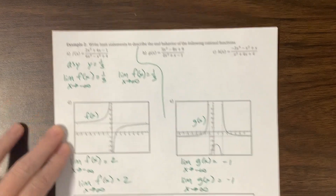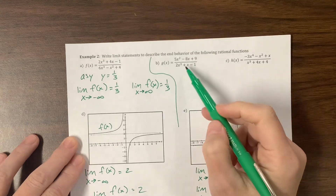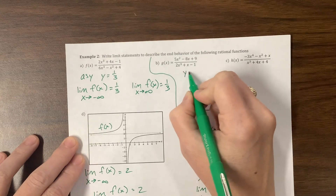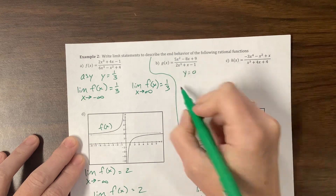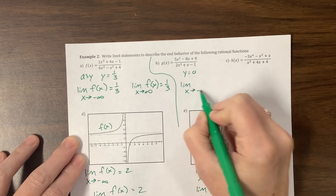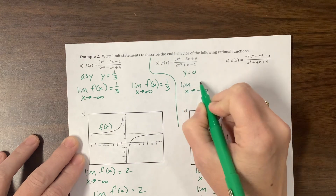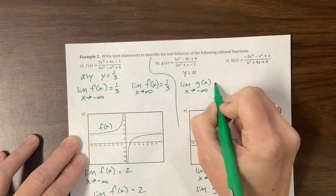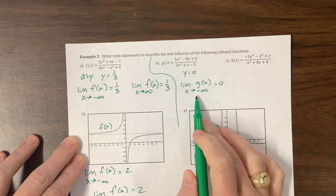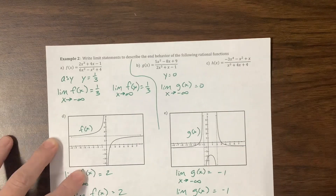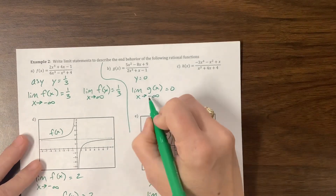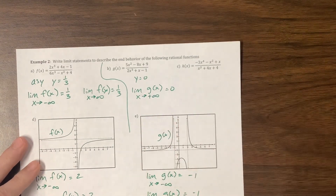Let's look at these two up here. This one is bottom-heavy, so the asymptote is y equals 0. The limit as x goes to negative infinity of g of x equals 0, and same thing for positive infinity.